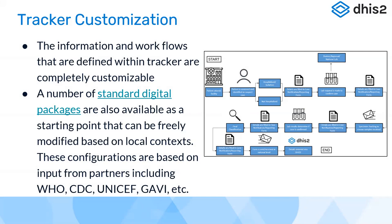Now that I have mentioned some overview of features and capabilities of DHIS2 Tracker — how are you going to customize it? The information and workflows defined within the tracker are completely customizable. DHIS2 Tracker is a kind of abstract concept and set of tools that you configure as per your country's or organization's requirements. This course is specifically about the features of Tracker and how to use it, but we also have another DHIS2 online academy for tracker configuration, covering how to configure the tracker program based on your country's requirements.